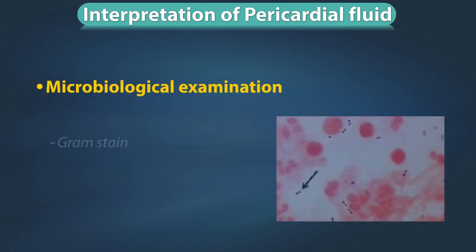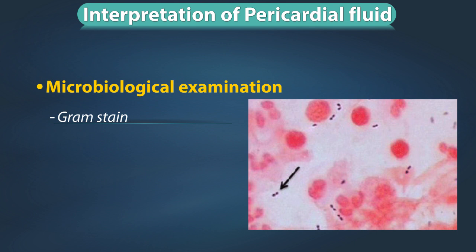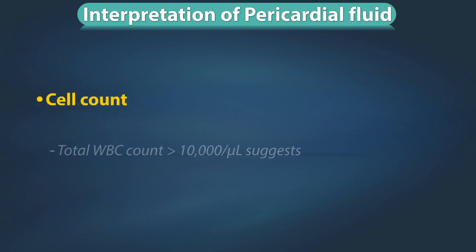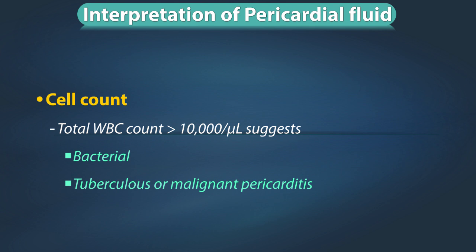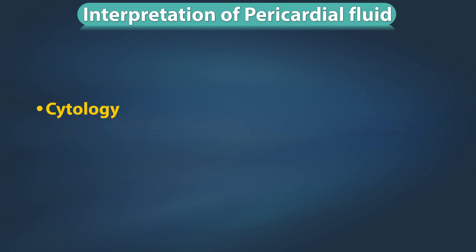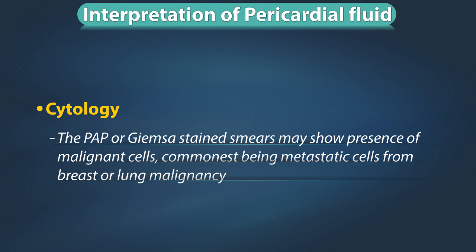Microbiological examination: gram stain may be positive in 50% of bacterial pericarditis, whereas culture may be positive in up to 80% of cases. Acid-fast stain may be positive in up to 50% of cases of tubercular pericarditis. Cell count: total white blood cell count more than 10,000 per microliter suggests bacterial, tuberculous, or malignant pericarditis.